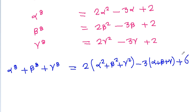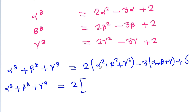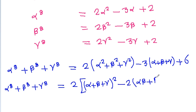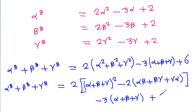So alpha⁸ + beta⁸ + gamma⁸ = 2(alpha² + beta² + gamma²) - 3(alpha + beta + gamma) + 6. And alpha² + beta² + gamma² = (alpha + beta + gamma)² - 2(alpha·beta + beta·gamma + gamma·alpha).